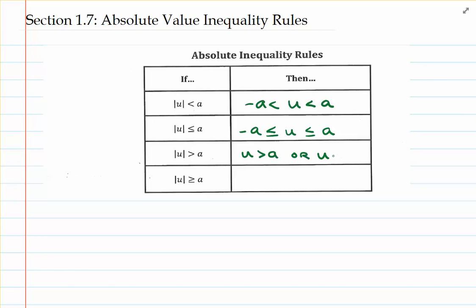For the second inequality, we actually make two changes. First, we reverse the direction of the inequality symbol — the first inequality involved greater than, and the second inequality is going to involve less than. Another major change is that we take the opposite of the value of a. So it's going to be u is less than negative a. So two major changes with the OR: the absolute value inequality involving greater than breaks up as: u is greater than a, or u is less than negative a.